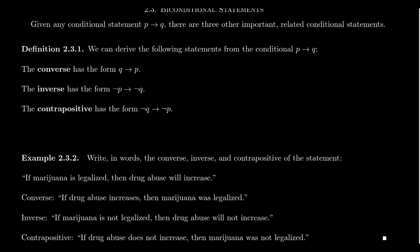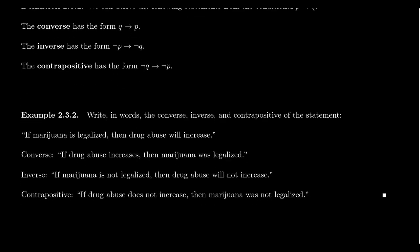Let's use a specific example to illustrate what's going on here. Consider the statement: if marijuana is legalized, then drug abuse will increase. This is our statement P implies Q. P is the premise — marijuana is legalized — and the conclusion is Q — drug abuse will increase.